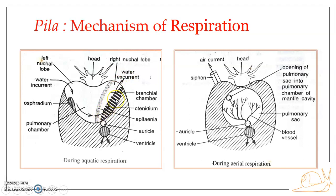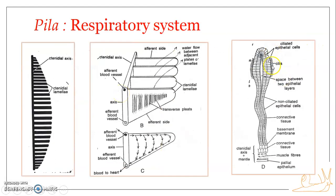As the water moves over the ctenidium, gaseous exchange takes place. The branches of blood vessels supplying the ctenidial lamellae are in contact with the water, which carries a good amount of oxygen. Oxygen diffuses into the blood vessels in the ctenidial lamellae, and carbon dioxide moves out. Water is kept moving with the help of the beating of cilia present on the lamellae.